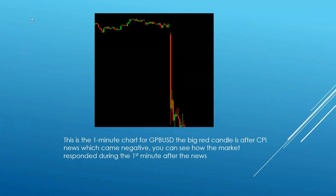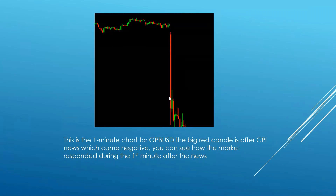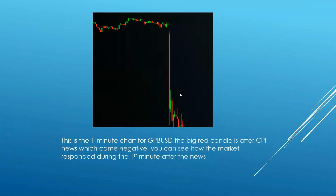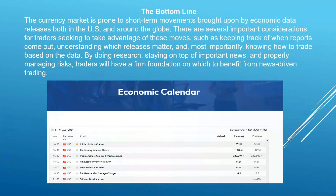Here's a live example: this is GBP/USD from yesterday. We had the Consumer Price Index (CPI) announcement, which measures inflation. The number came in very negative. You can see on the one-minute chart how the move was very choppy and slow before the news, then suddenly when the news released there was a very strong move. This gives you a clear example of how the market reacts and moves on news compared to normal price action.